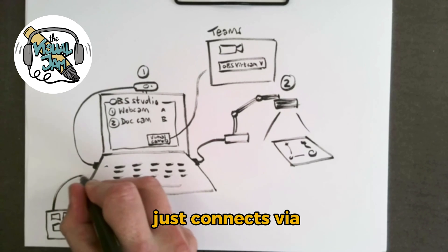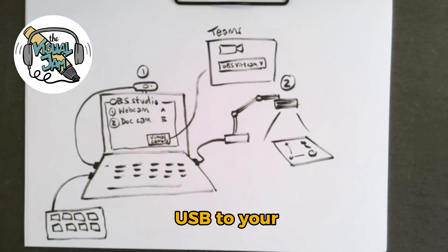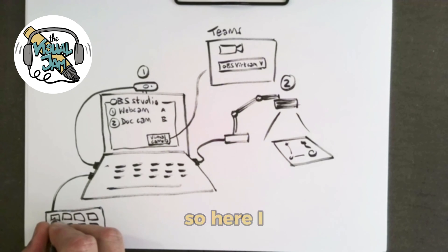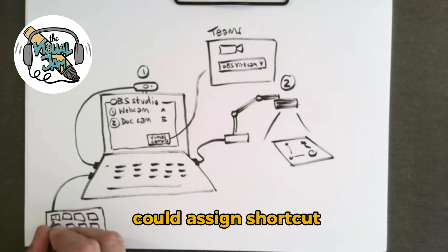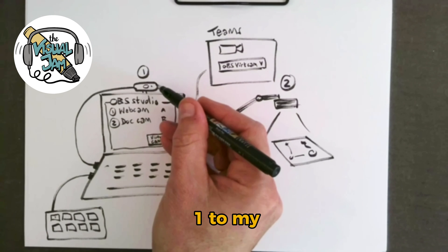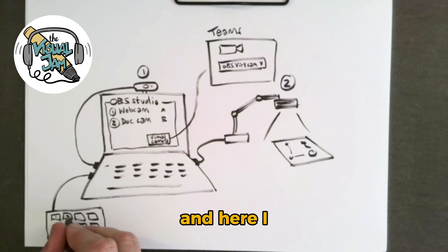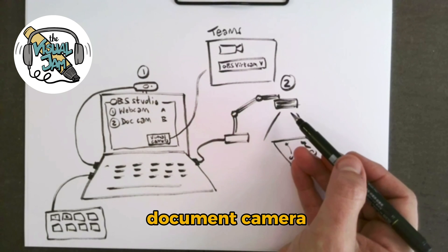But again, that just connects via USB to your machine. And then what you can do is you can assign shortcuts to these buttons. So here I could assign shortcut one to my main webcam. And here I could set shortcut two to be my document camera.